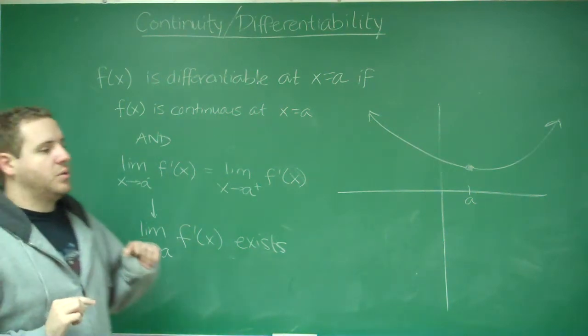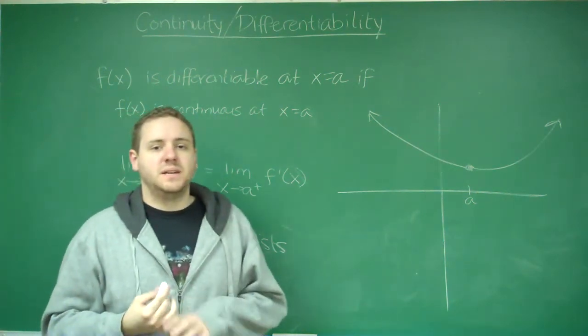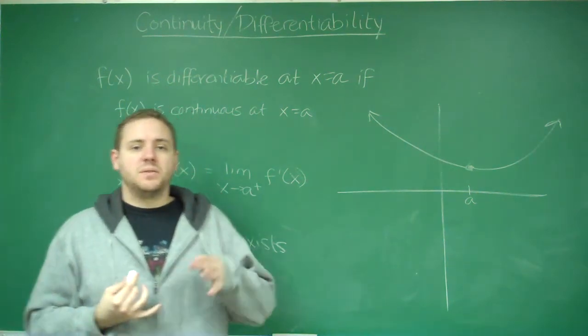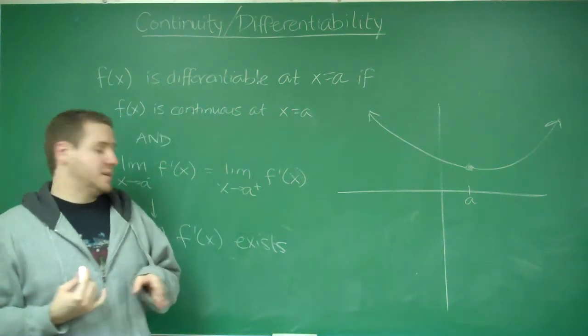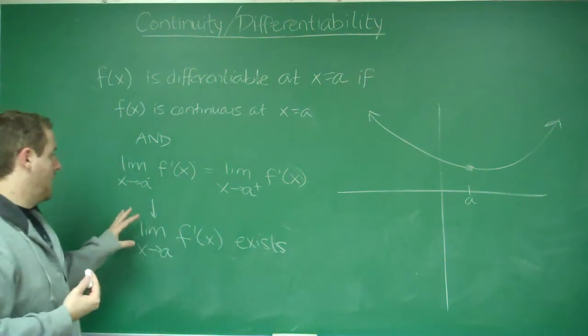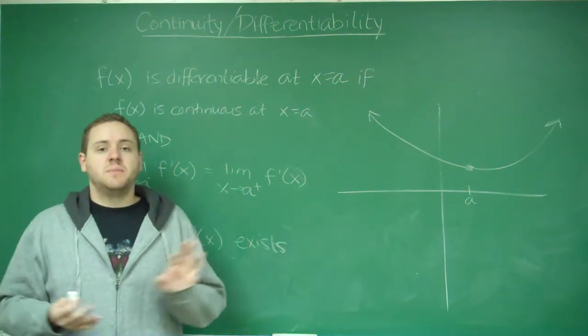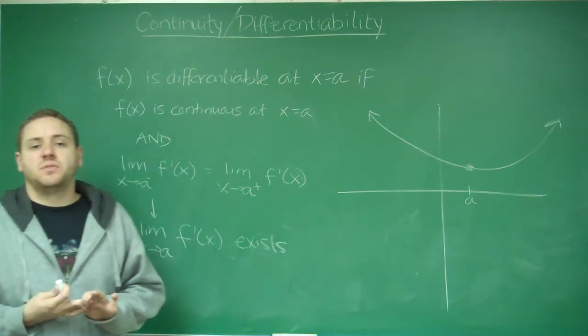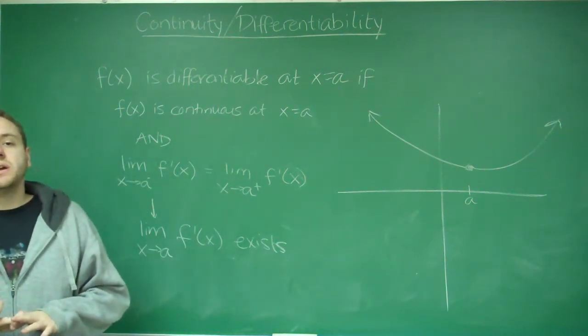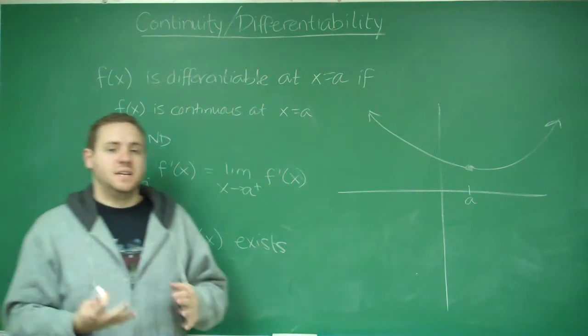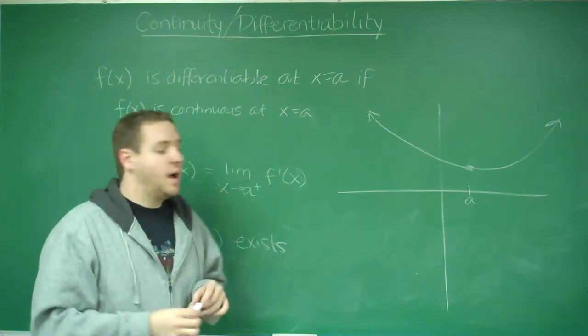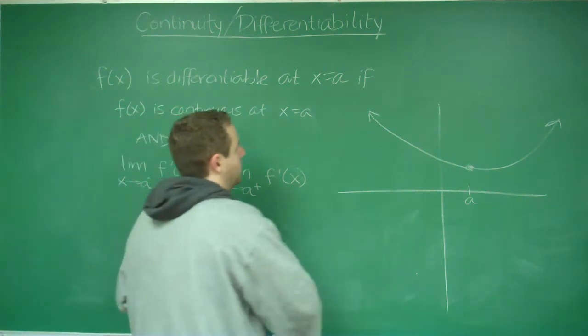So not only does the function have to be continuous, but the slopes essentially have to approach the same value from the left and the right. Let's look at a function that's continuous but not differentiable.